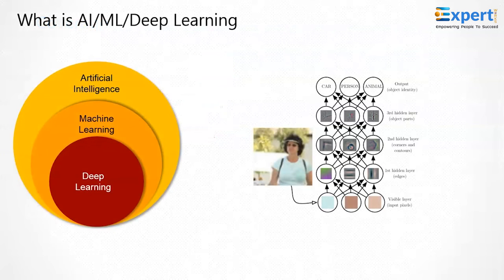Artificial intelligence is basically the ability of a machine to perform cognitive functions we associate with human minds, such as perceiving, reasoning, learning, and problem solving. Examples of technologies that enable AI to solve business problems include robotics, autonomous vehicles, computer vision, language, virtual intelligence, and machine learning. Machine learning is a subset of artificial intelligence where algorithms detect patterns and learn how to make predictions and recommendations by processing data and experience rather than explicit programming.